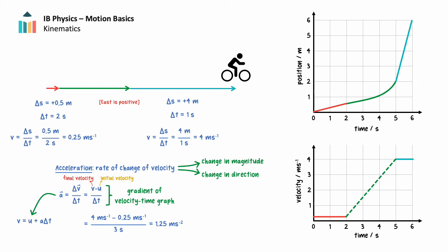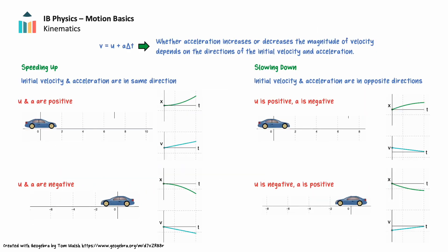The average acceleration of an object over a time period can be calculated as the gradient of the velocity-time graph over that time period. Acceleration, being a vector quantity, can be positive or negative. Acceleration can be positive while causing an object to either speed up or slow down, or negative while causing an object to slow down or speed up.